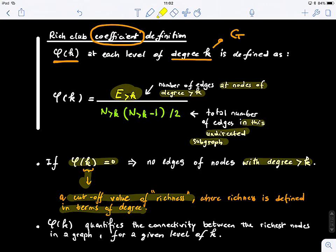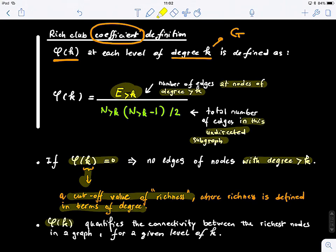So how we define the richness is in terms of the degree of a node. And φ(k), basically, this richness coefficient, it quantifies the connectivity between the richest nodes in a graph for a given level k of that graph. So it tells us how rich are the nodes in that subgraph, basically.